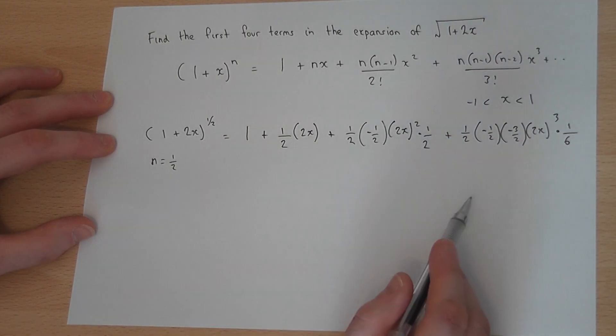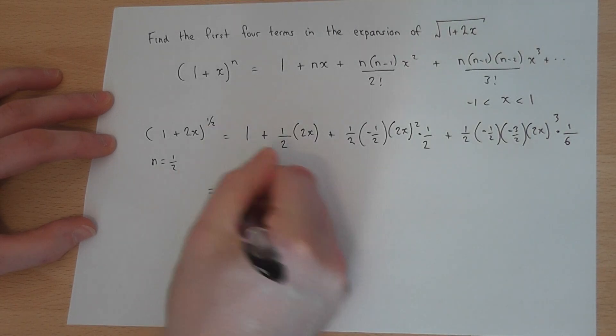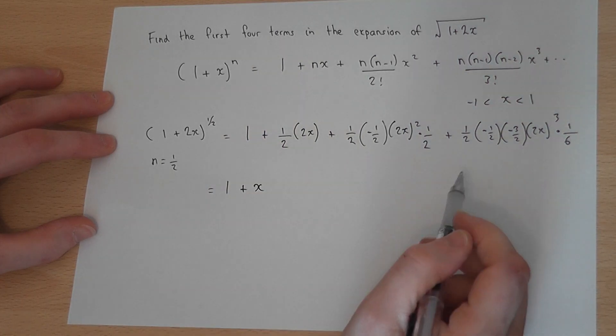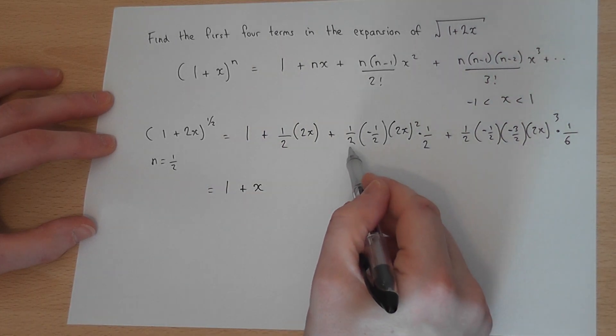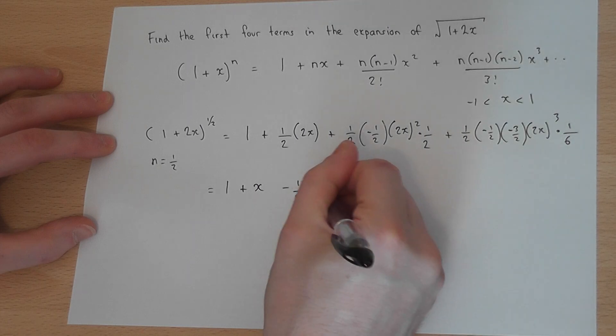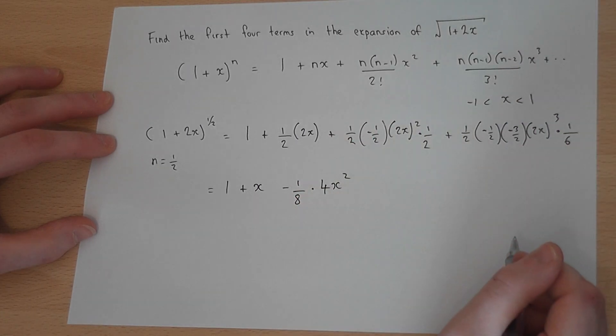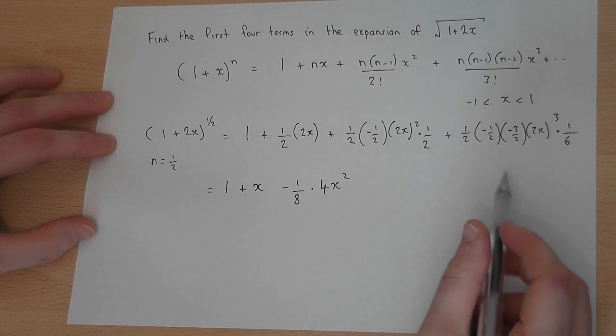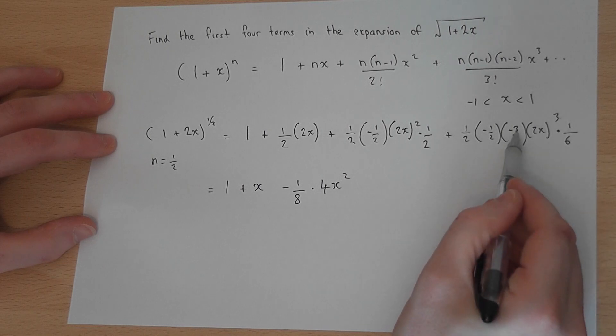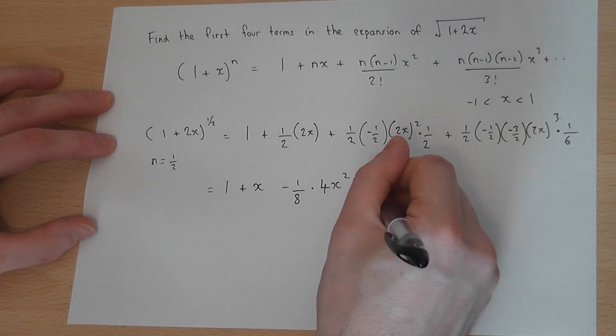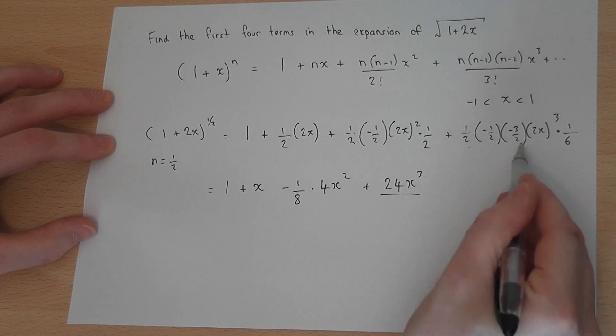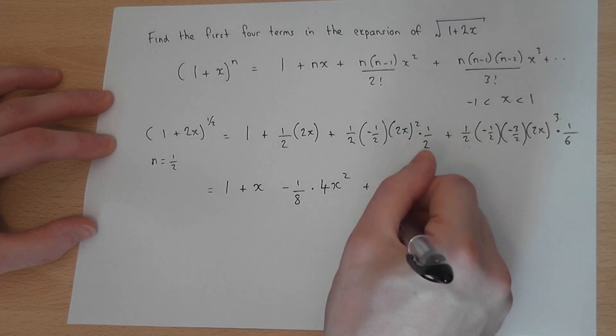So I can now begin to work out each term separately. So I get a 1. Well, a half of 2 is just 1, so 1 plus x. Now, a half times minus a half times a half will be minus an eighth. And 2x squared is the same as 4x squared. And now let's keep on going. So we've now got 2 negatives, which become positive. I've got 2 cubed is 8, so 3 times 8 is 24. I've got plus 24x cubed on the top. 2 times 2 times 2 is 8. 8 times 6 is 48.